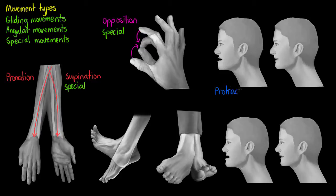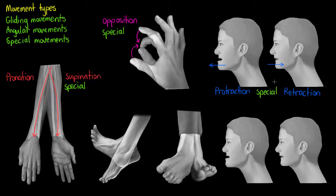The next movement is called protraction. In protraction we are pushing our mandible forward, and this forward motion is non-angular — a non-angular anterior movement. We also have non-angular posterior movement, which we call retraction. So retraction is pulling the jaw backwards: anterior movement is protraction and posterior movement is retraction.